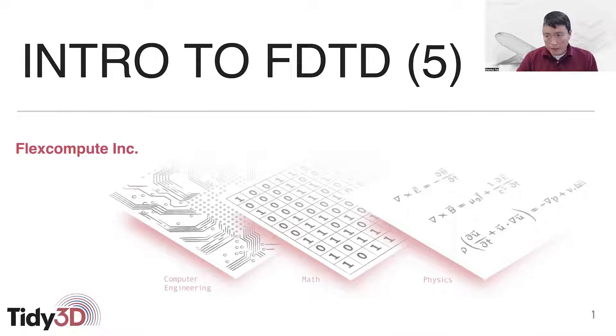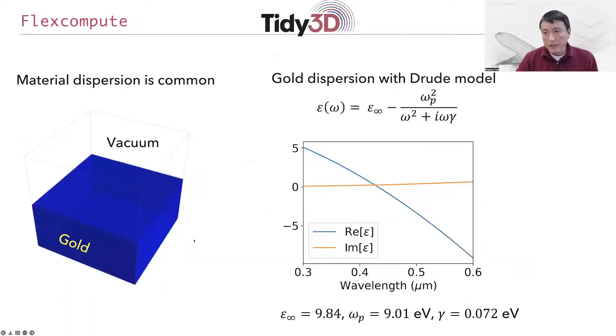Today in particular, we will talk about the modeling of dispersive material in FDTD method. Material dispersion is quite common, and this shows up when the dielectric permittivity or the dielectric function is a function of frequency. In other words, this shows up when the material responds differently to light at different color or different frequency.